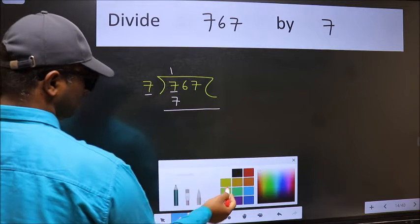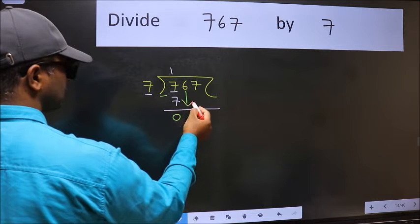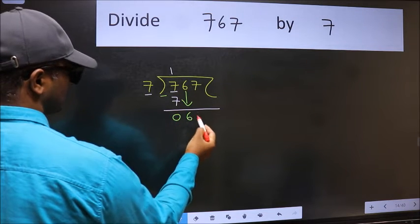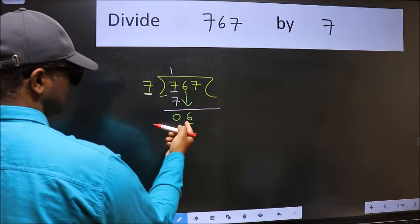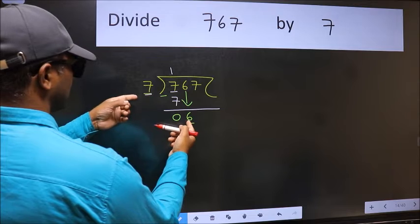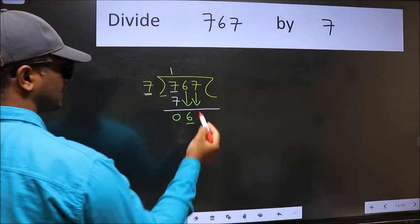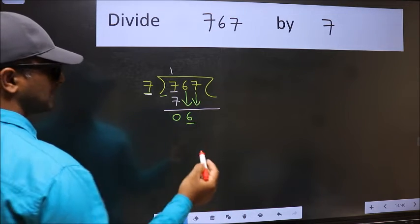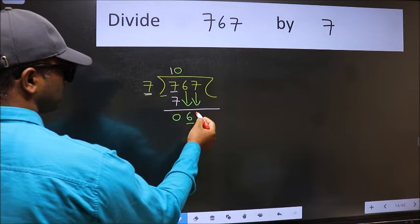Now we should subtract, we get 0. After this, bring down the beside number, so 6 down. Now here we have 6 and here 7. 6 is smaller than 7, so we should bring down the second number. And the rule to bring down the second number is we should put 0 here, then only we can bring this number down.